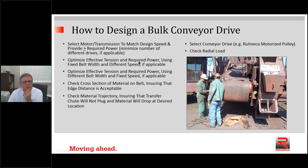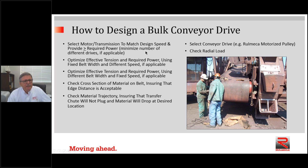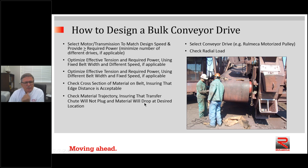As we move forward in conveyor drive design, we need to select a motor and transmission to match the design speed and provide equal to or more than enough power. We optimize effective tension and required power using a fixed belt width with different speeds, or vice versa. We check the cross-section to ensure edge distance is acceptable, and we check the material trajectory to ensure the transfer chute will not plug and material will drop at the desired location.